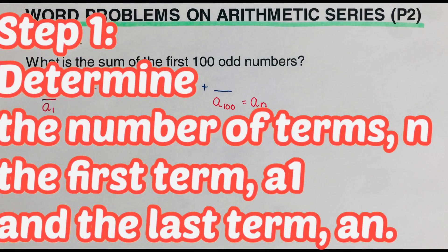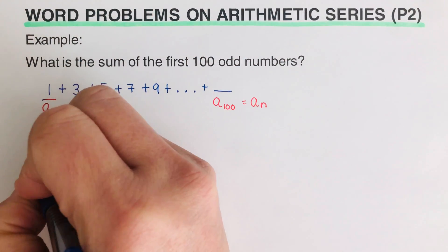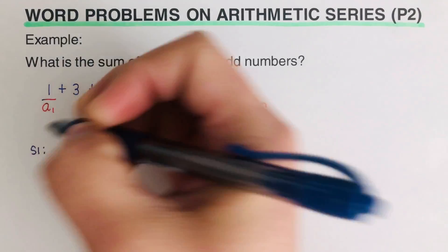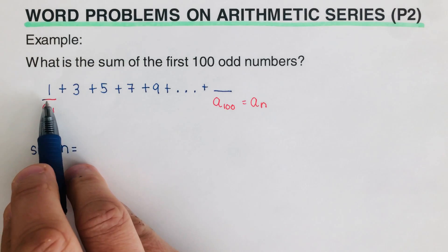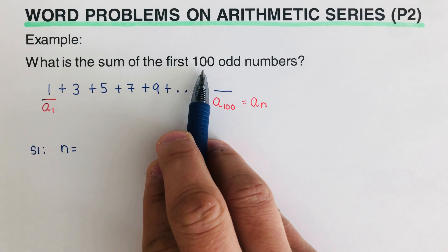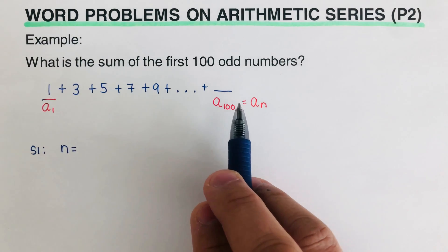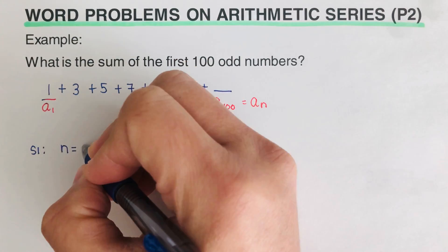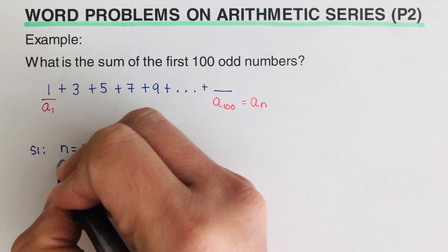In order to solve this kind of problem, there are steps we need to follow. Step 1 is to determine the number of terms n, the first term a₁, and the last term a sub n. In this problem, n represents the number of terms — since we want the first 100 odd numbers, there are 100 terms. So n = 100.